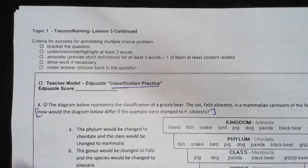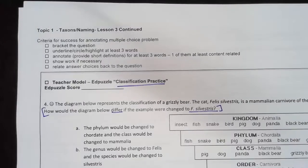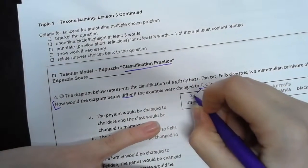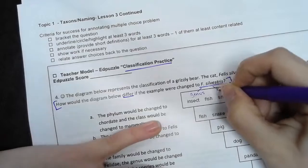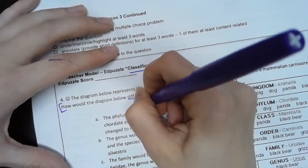First step: How would the diagram below differ if the example were changed to F. Silvestris? I know that this is a scientific name. The first part is always the genus, the second part is always the species. 'Differ' means be different.